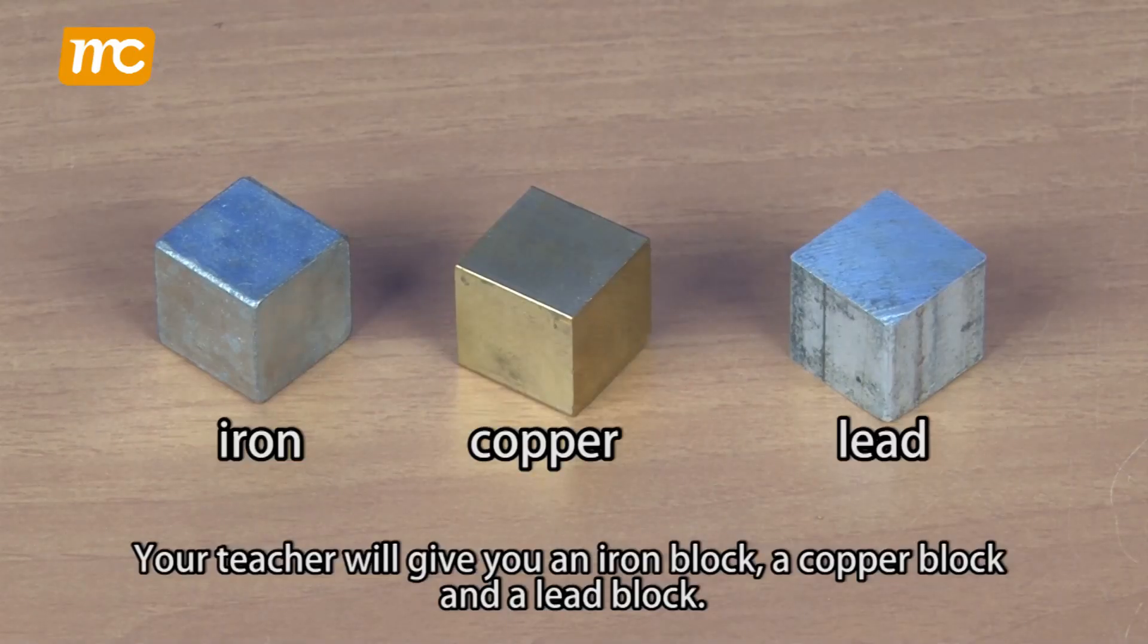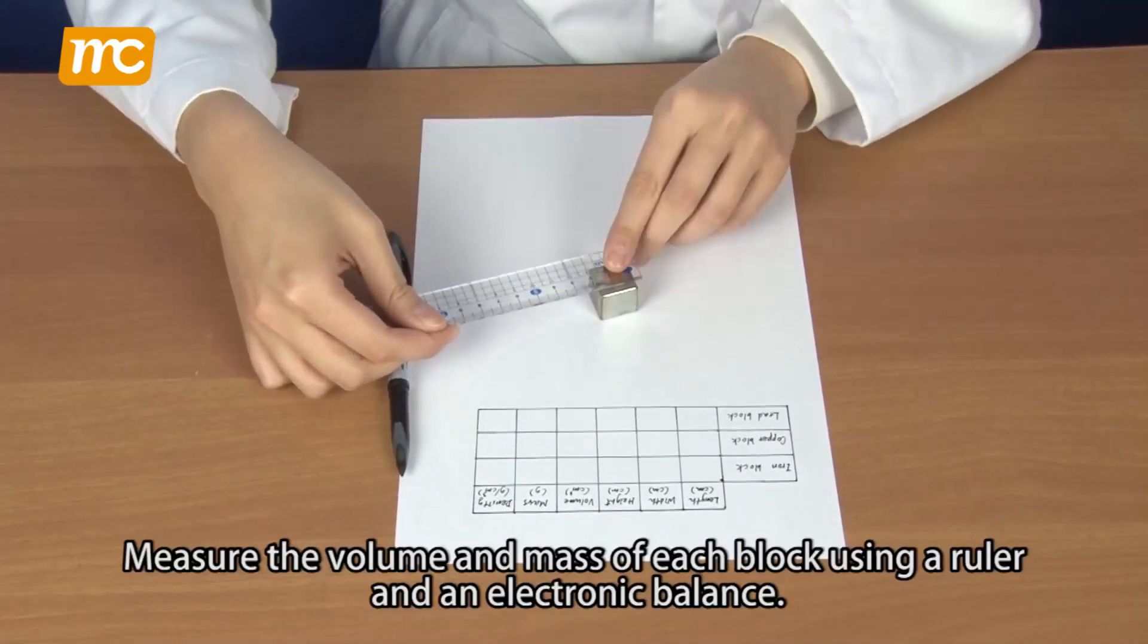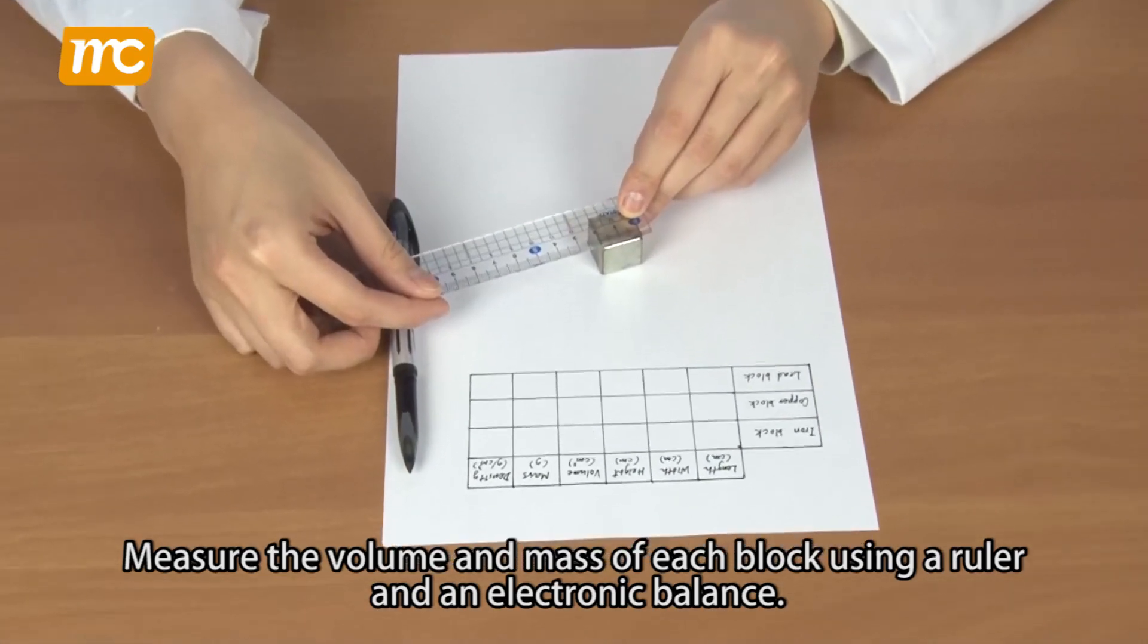Your teacher will give you an iron block, a copper block, and a lead block. Measure the volume and mass of each block using a ruler and an electronic balance.